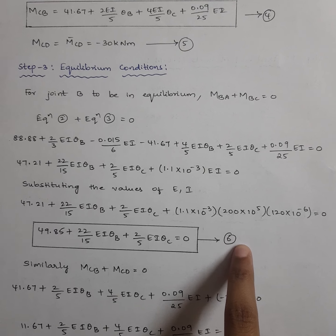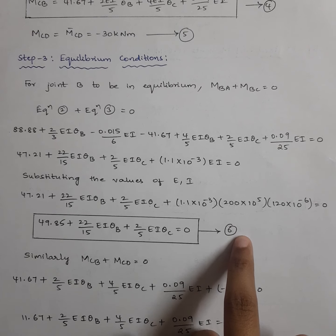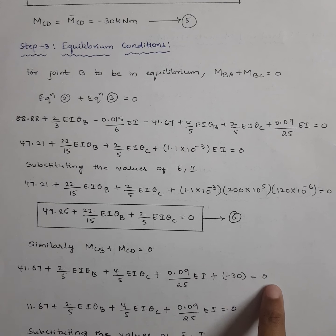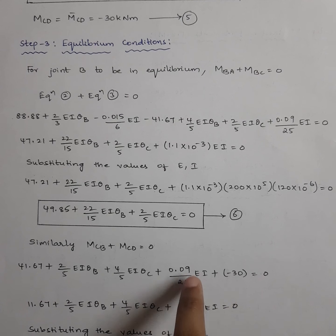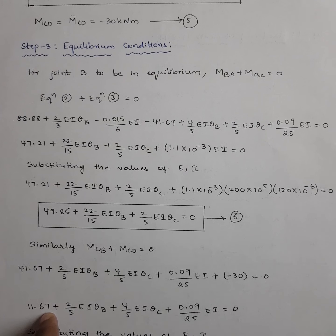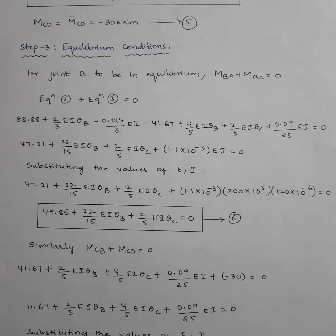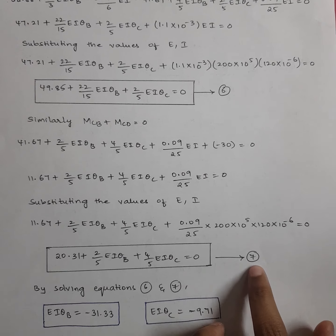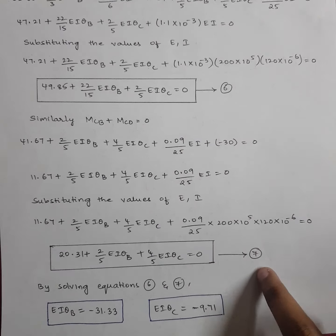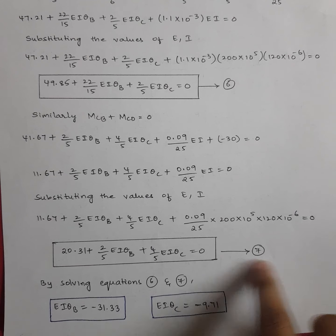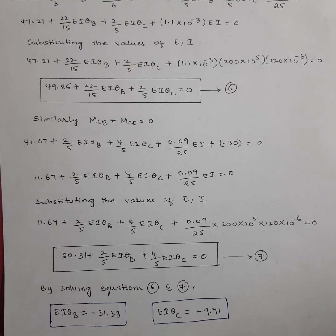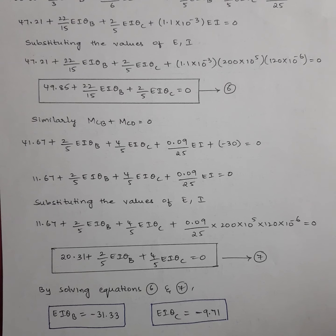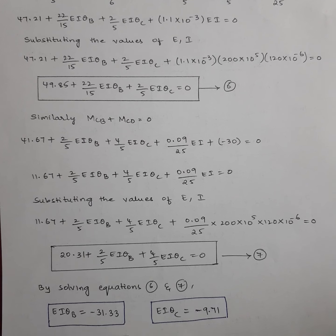Similarly, at joint C, apply the condition M_CB + M_CD = 0. Add both equations and set equal to zero. After substituting the values of E and I you get equation 7. Now solve equations 6 and 7 simultaneously — you have two equations and two unknowns — and you get: EIθB = minus 31.33 and EIθC = minus 9.71.